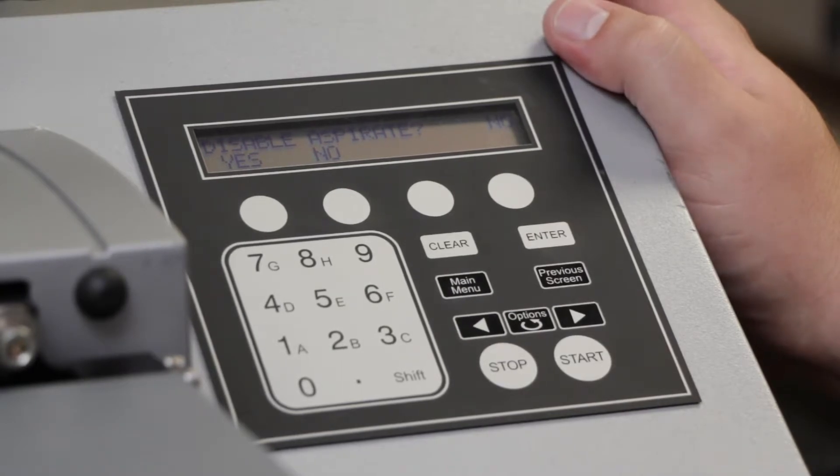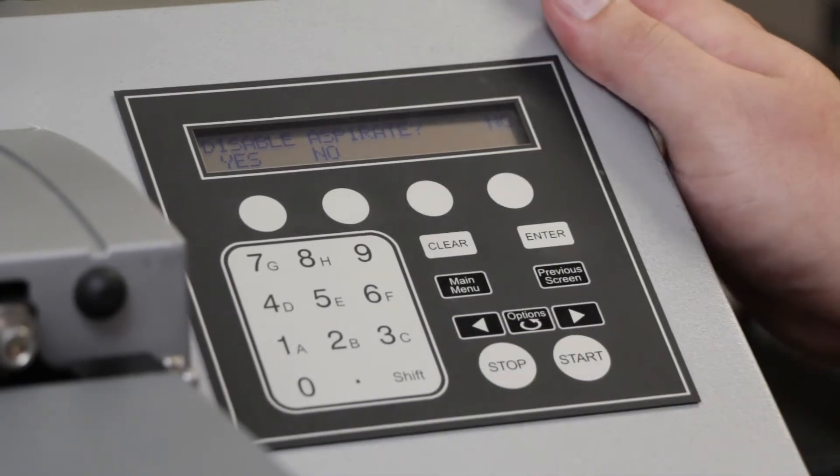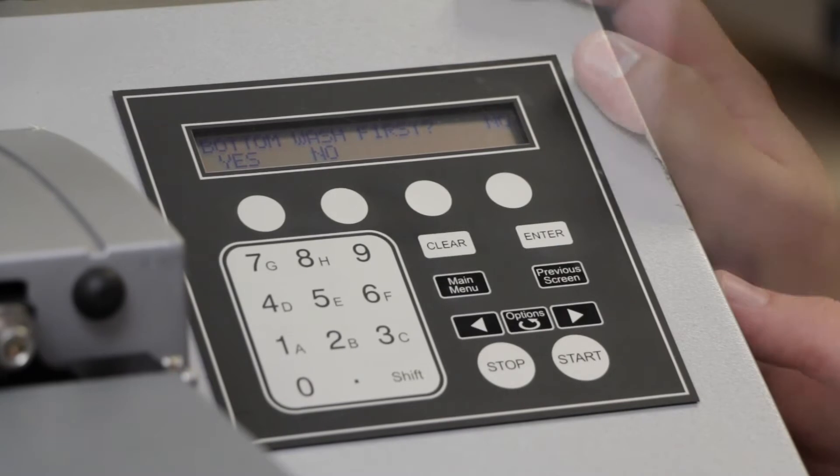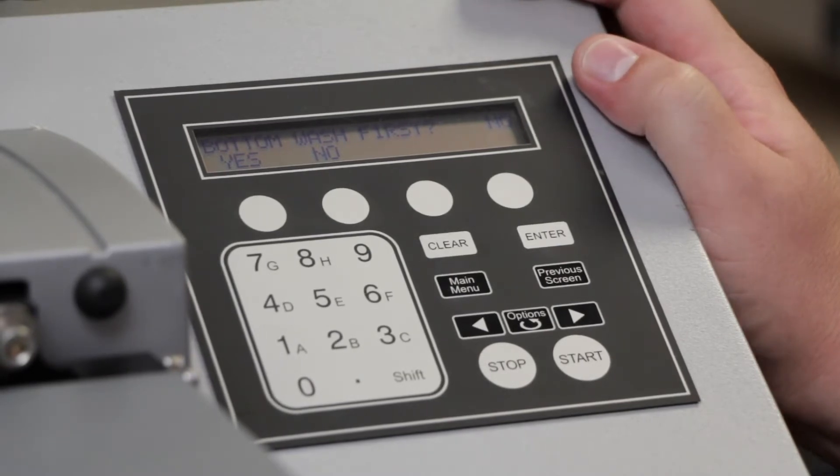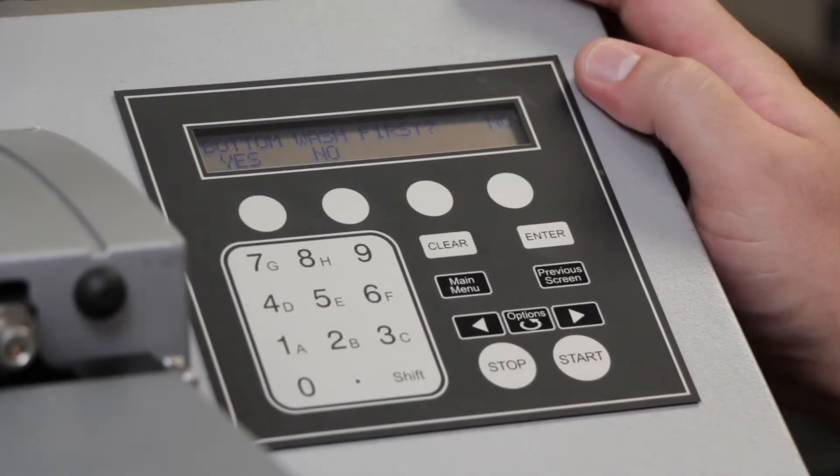Disable aspirate option is useful for if you're running a bead assay or any situation where you don't want the aspiration to run while you're dispensing. Since the aspirate tube sits so close to the dispense tubes, this can be an issue with some options. In our case, we're not concerned with that, so we'll leave the disable aspirate off. Bottom wash first adds an extra aspirate and dispense to the beginning of your cycles. In our case, we're not going to be utilizing this, so we'll press no.